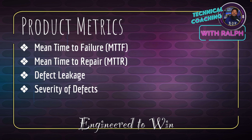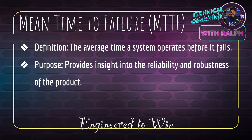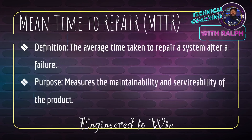Under product metrics we have: mean time to failure (MTTF), mean time to repair (MTTR), defect leakage, and severity of defect. MTTF is the average time a system operates before it fails, providing insights into the reliability and robustness of the product — this may involve load testing and could fall upon a site reliability engineer. All of these bubble up under the quality assurance umbrella.